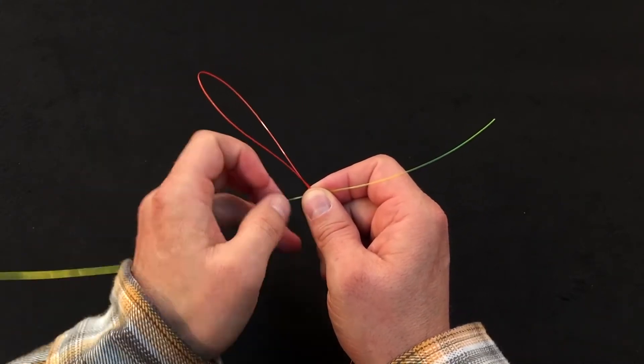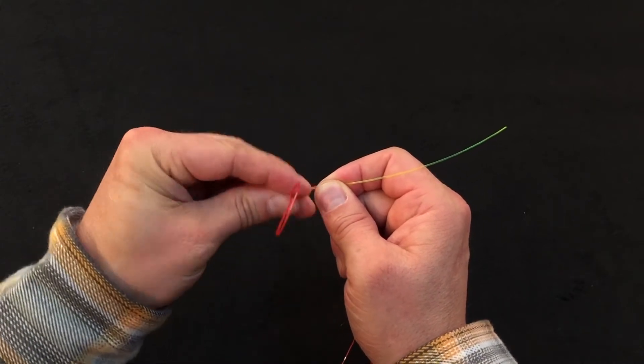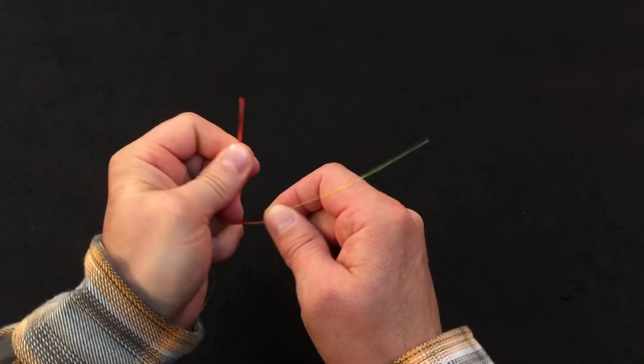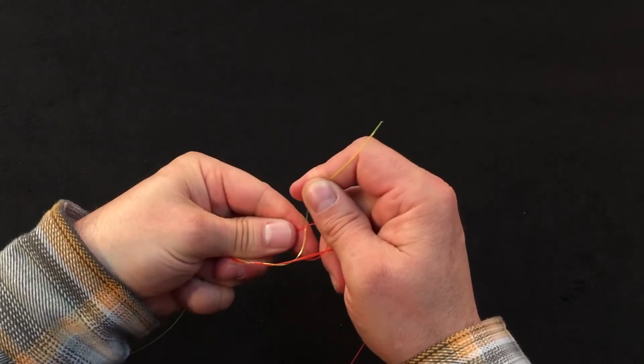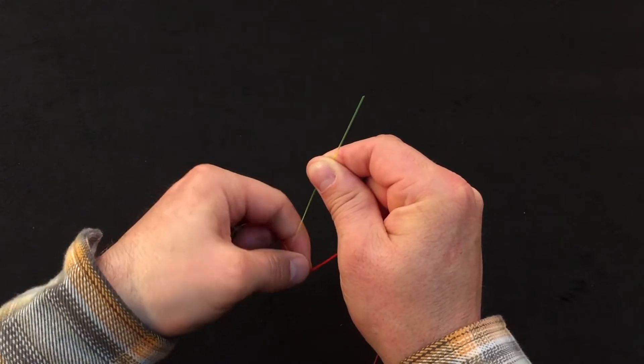Next, we're going to wrap away from us three turns around the main line. One, two, three turns. And we're going to take that tag in and tuck it in the V of our two materials.